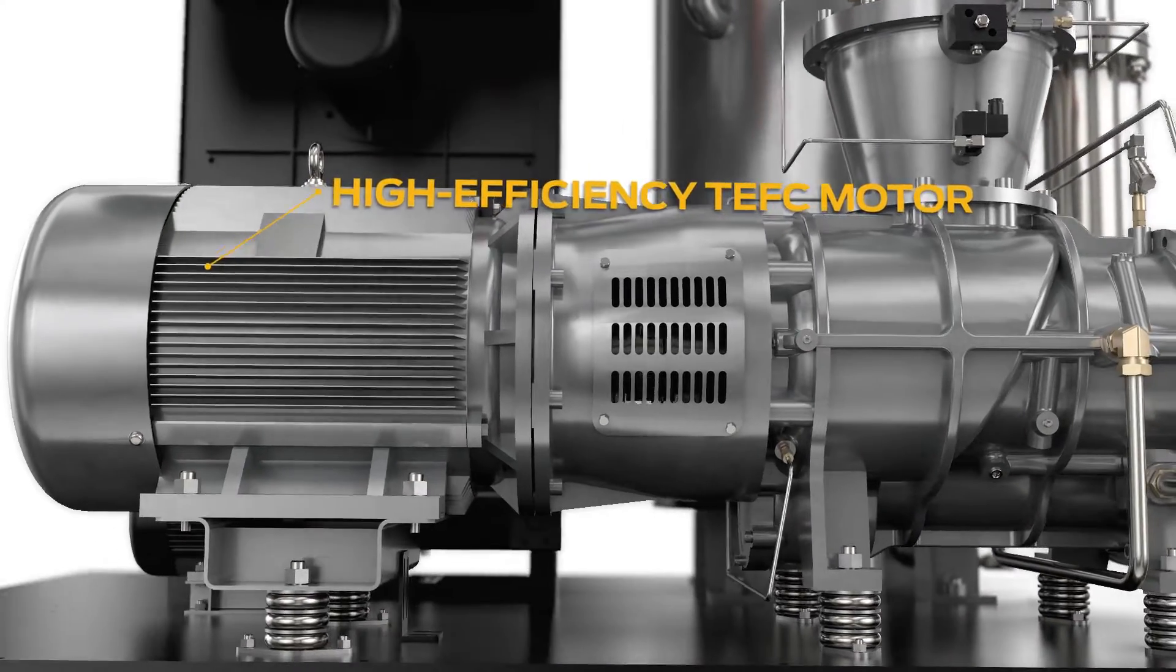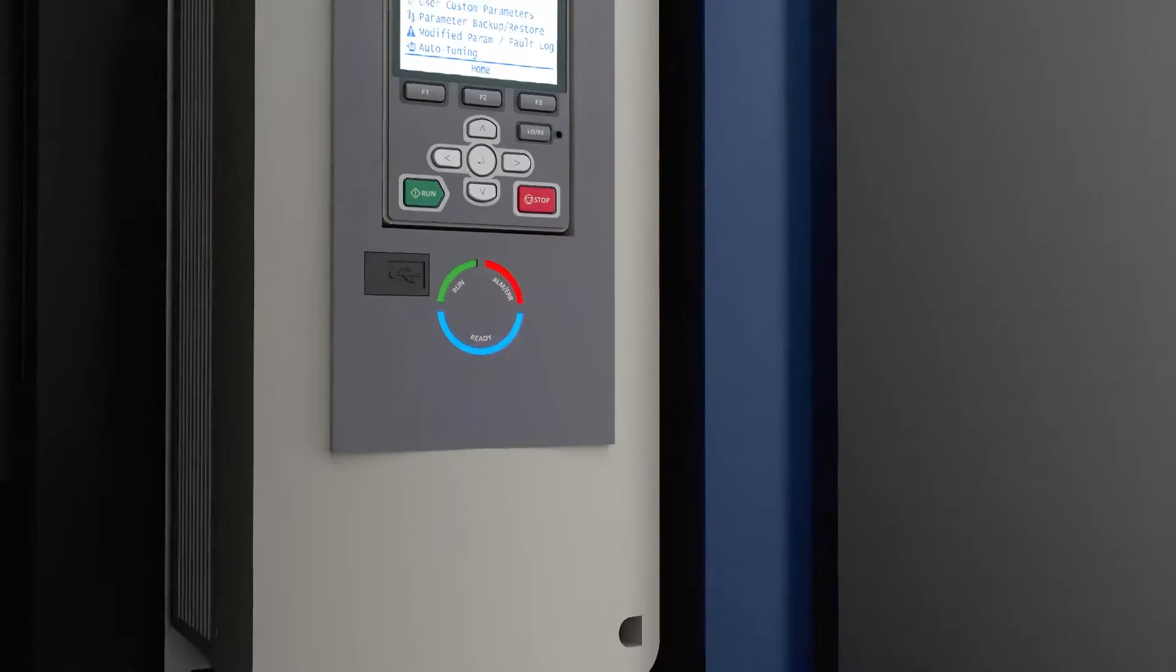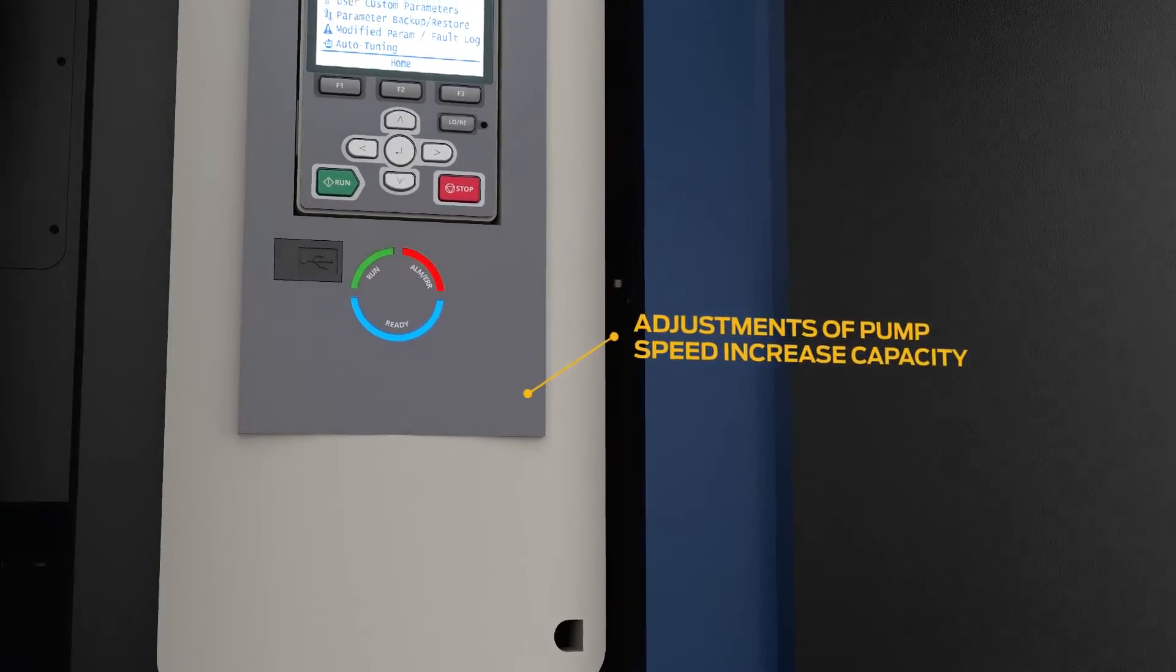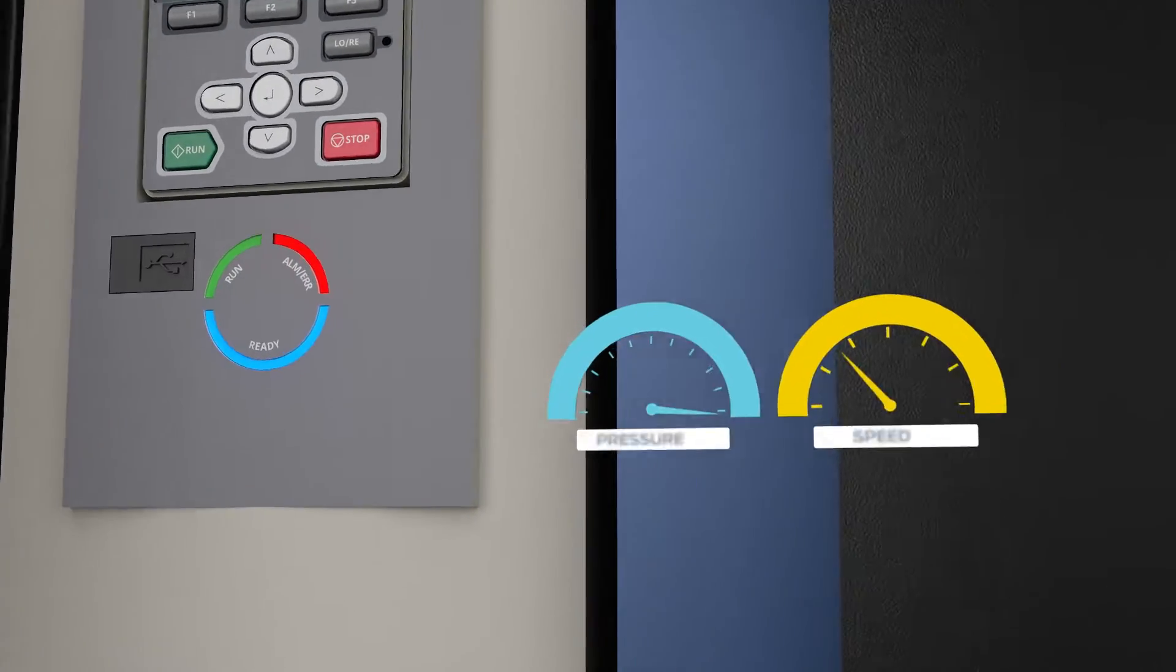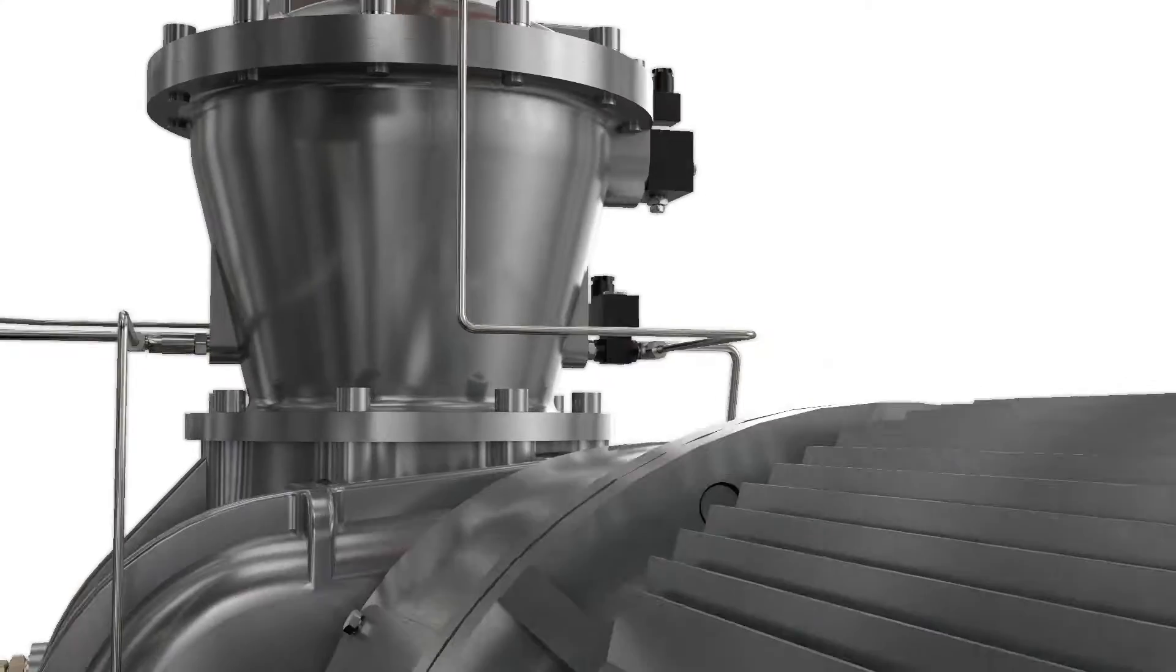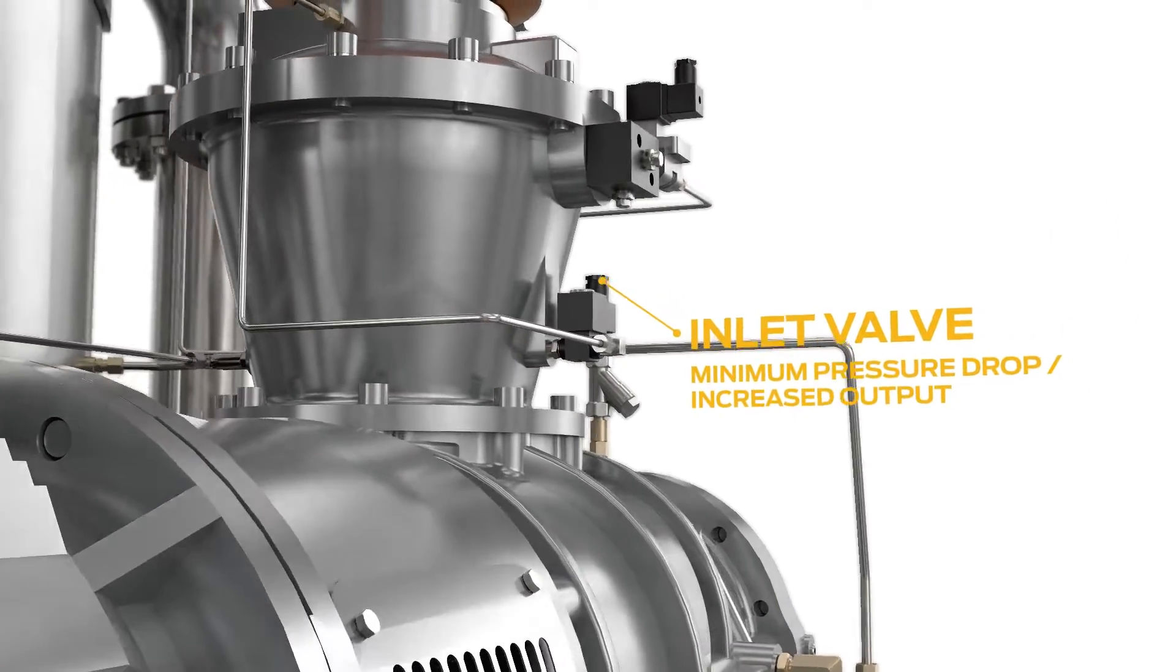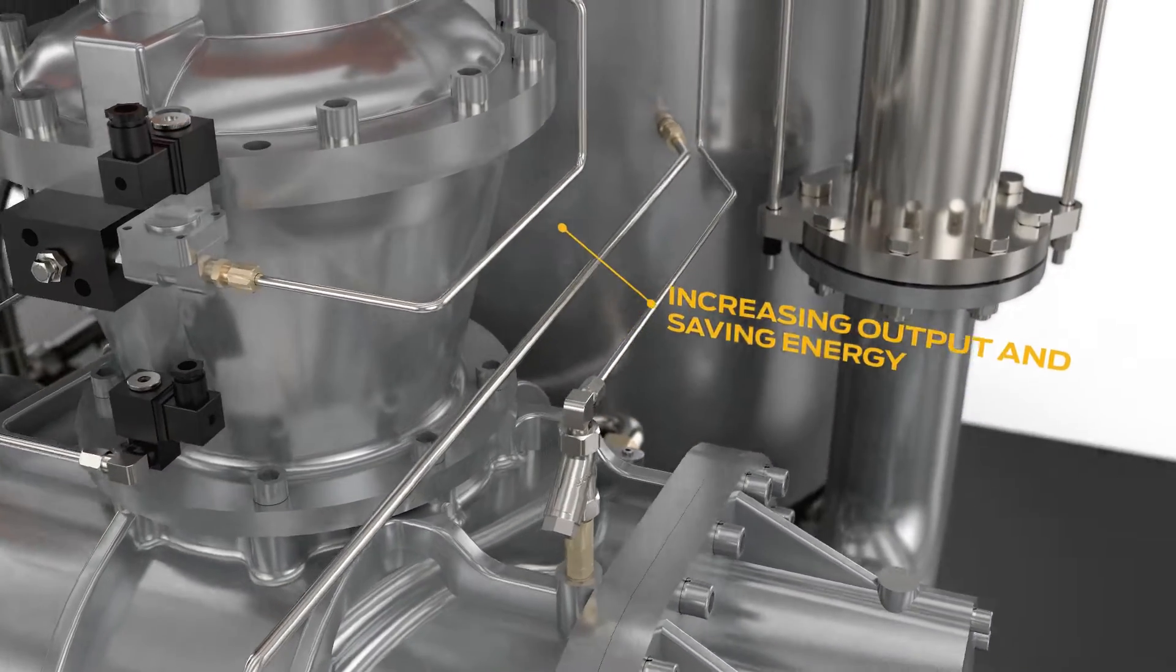Variable speed vacuum pumps have the distinct advantage of being able to adjust the speed of the pump, and therefore the capacity, based on the motor horsepower available at different inlet conditions. When the inlet pressure is higher like at startup, it runs at slower speed. As that vacuum level increases, the speed and the capacity increase for better performance at the desired ultimate vacuum level.